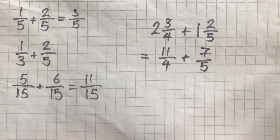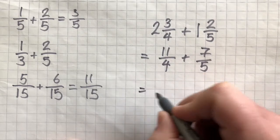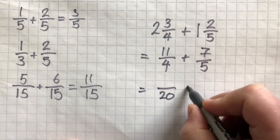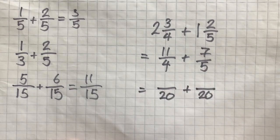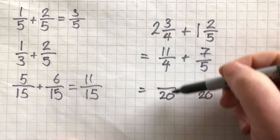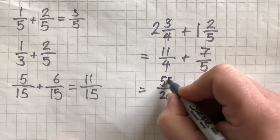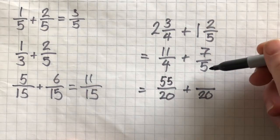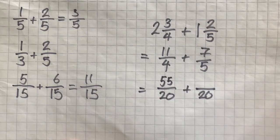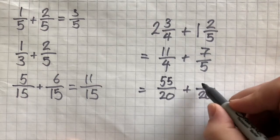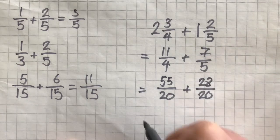Now, again, we need to find a number in the 4 and the 5 times table. The first number, we realize, is 20. So, we're going to change both of these fractions to over 20. 4 times 5 is 20, so 11 times 5 is 55. 5 times 4 is 20, so 7 times 4 is 28.